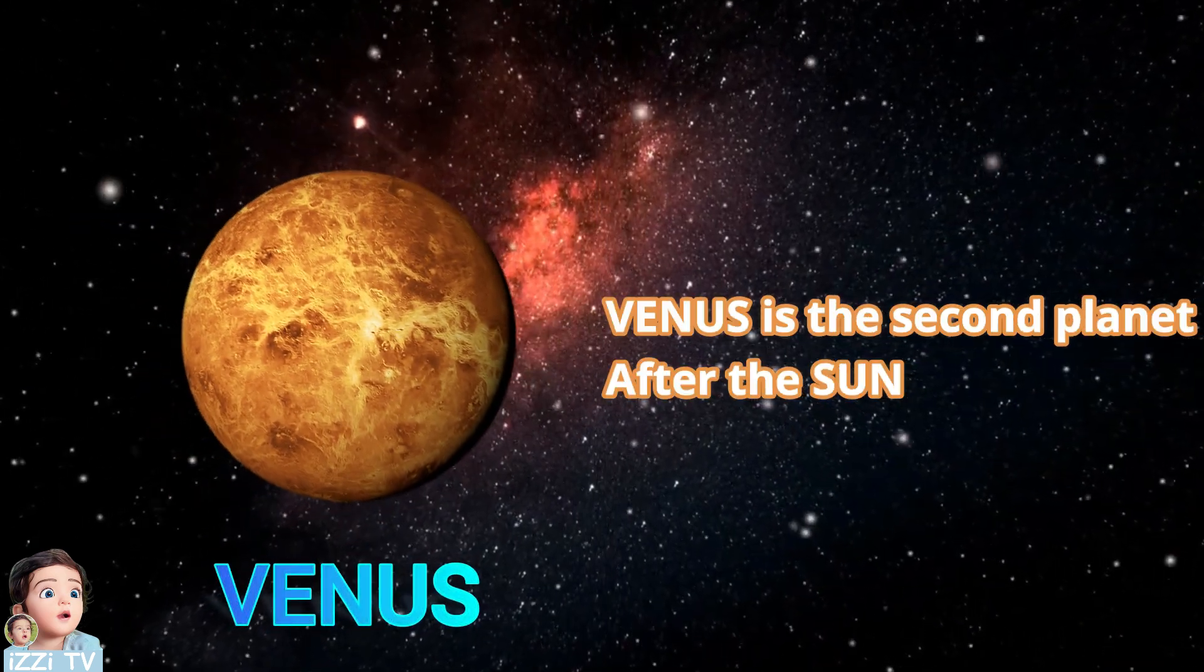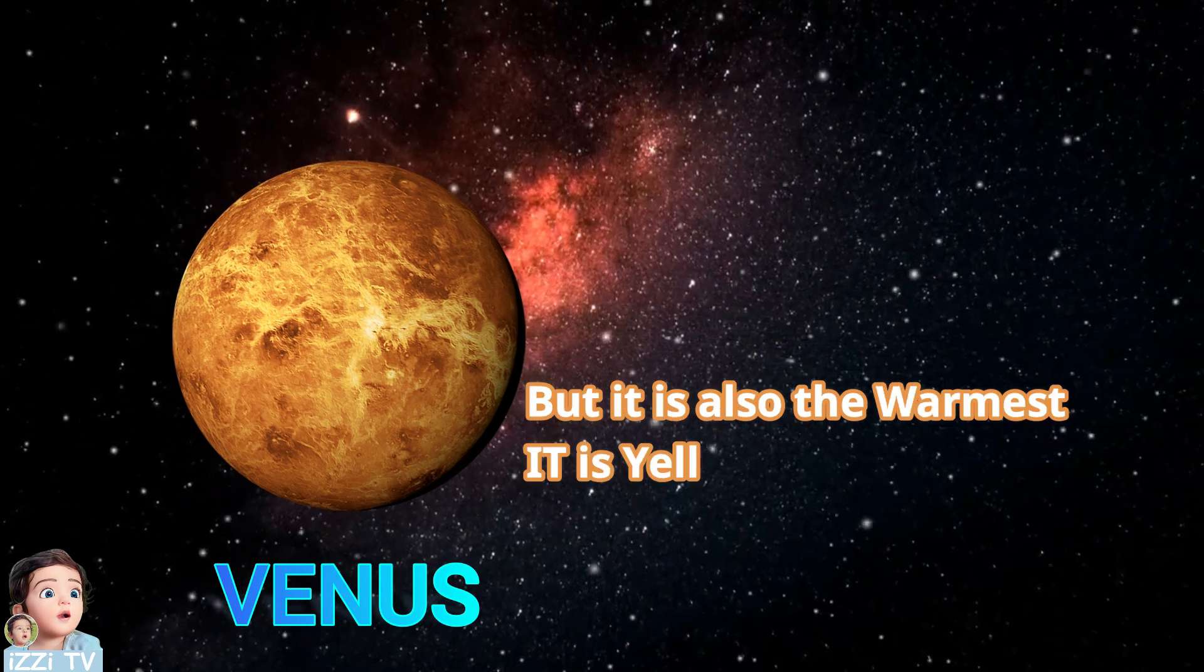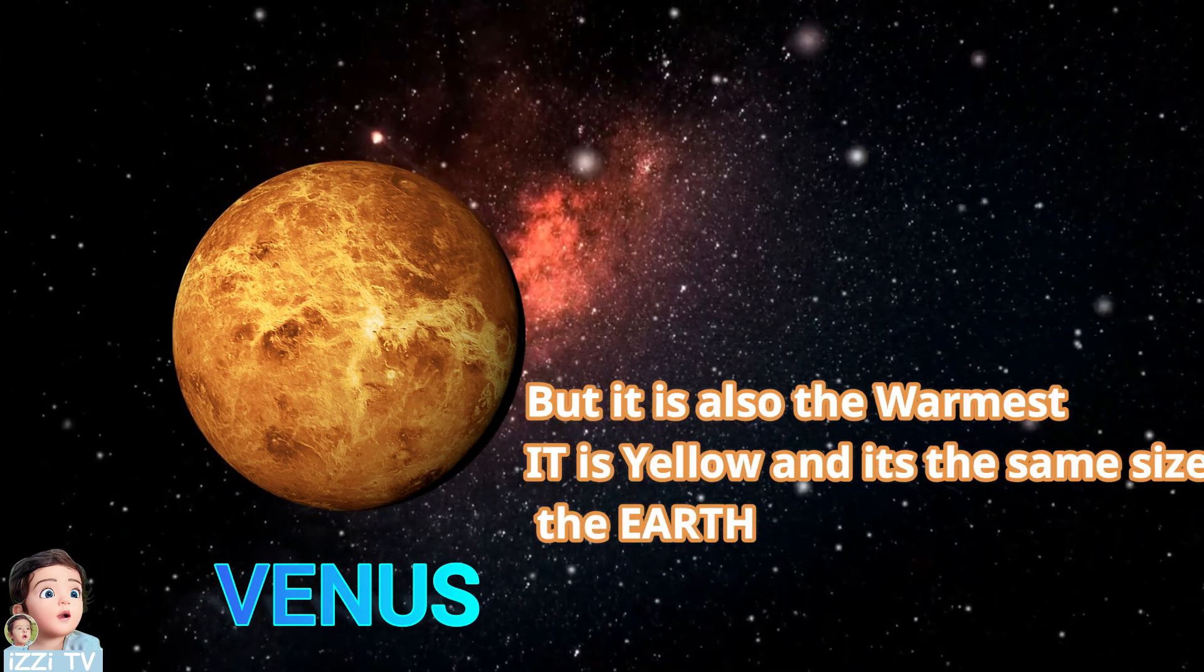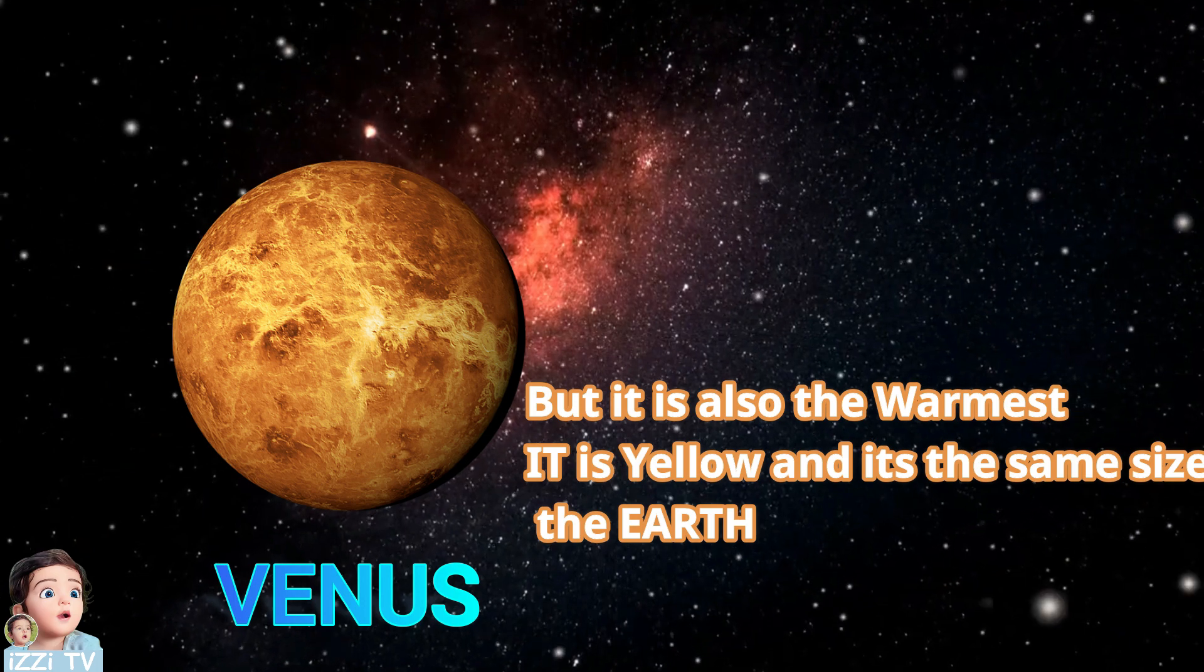Venus is the second planet after the sun, but it's also the warmest. It is yellow and it's the same size as the Earth.